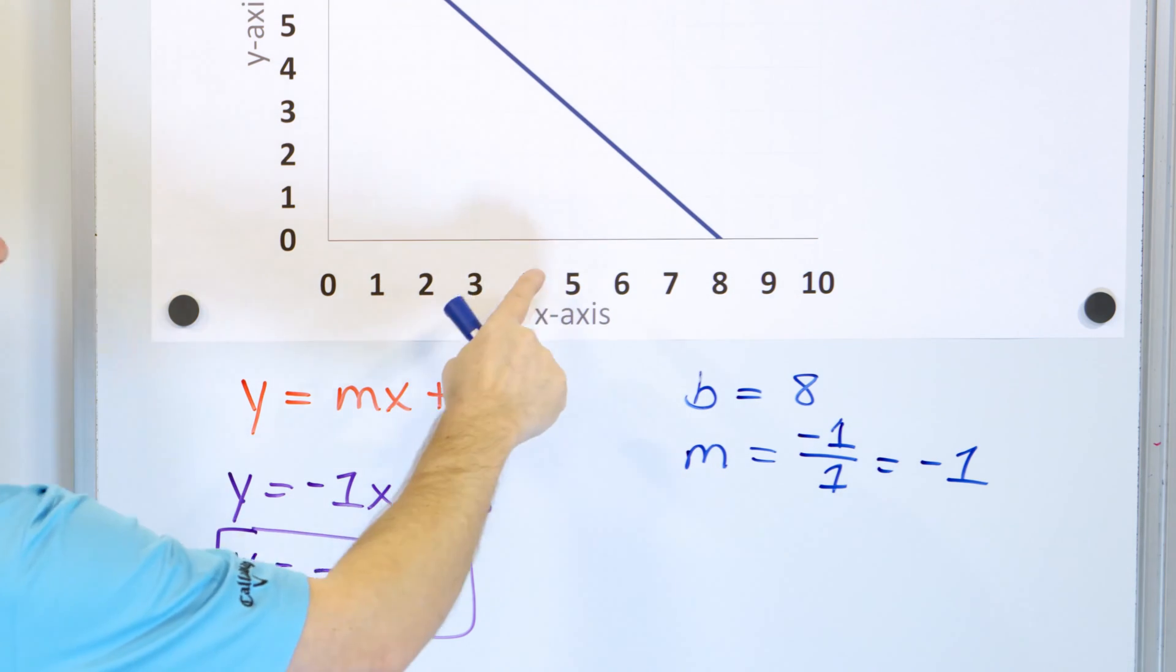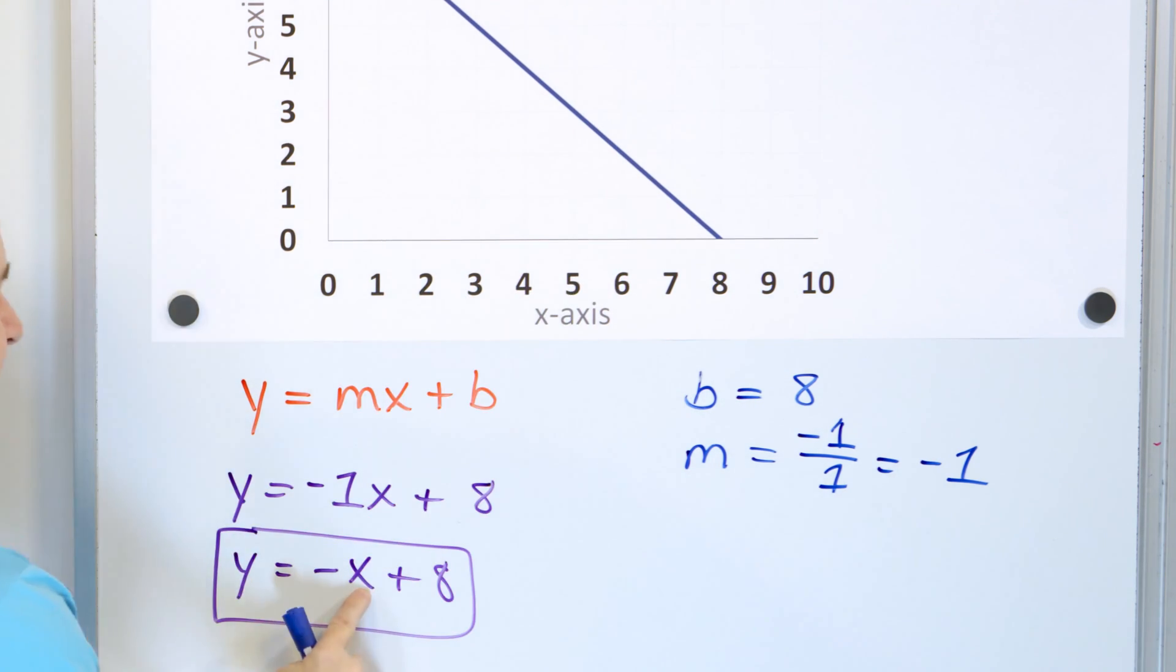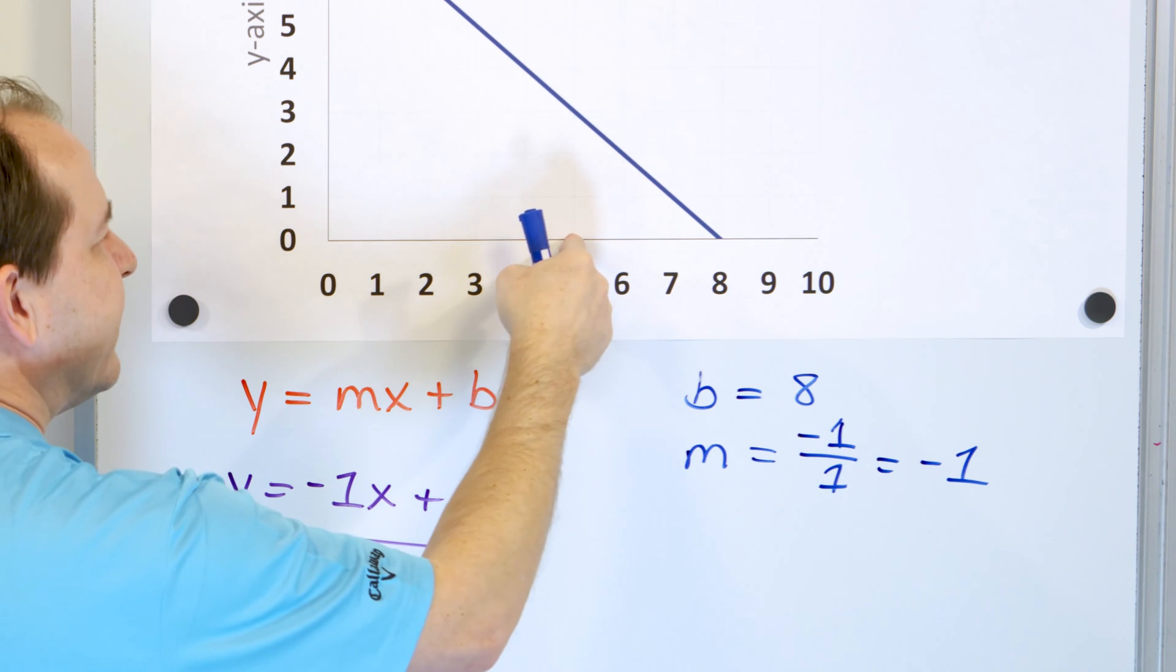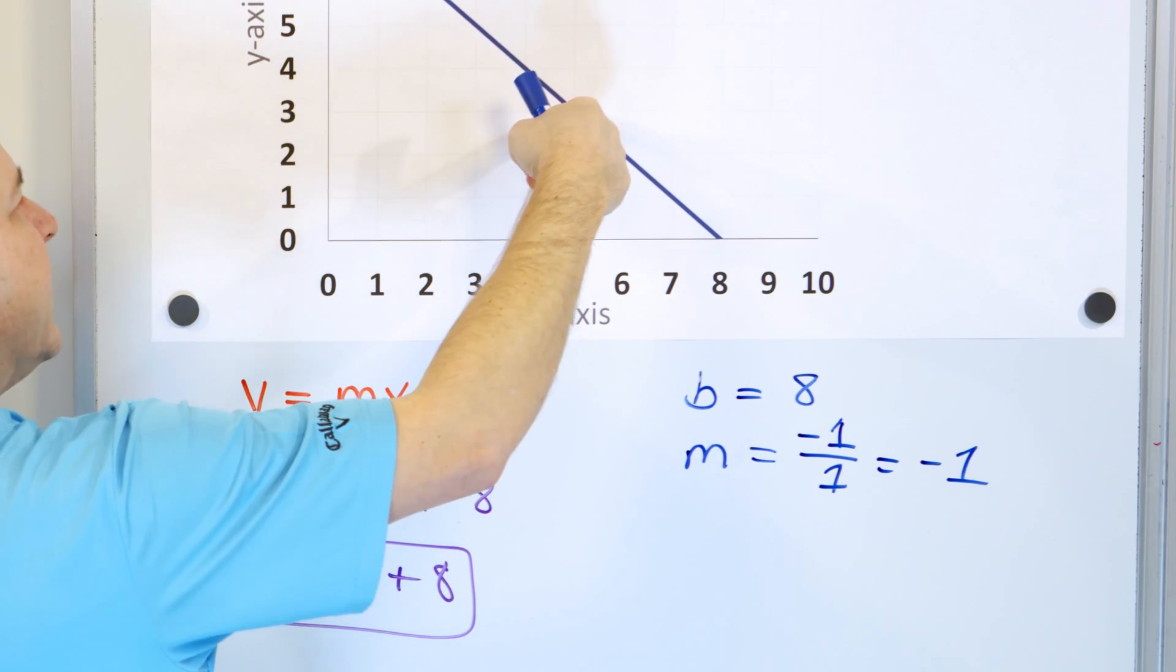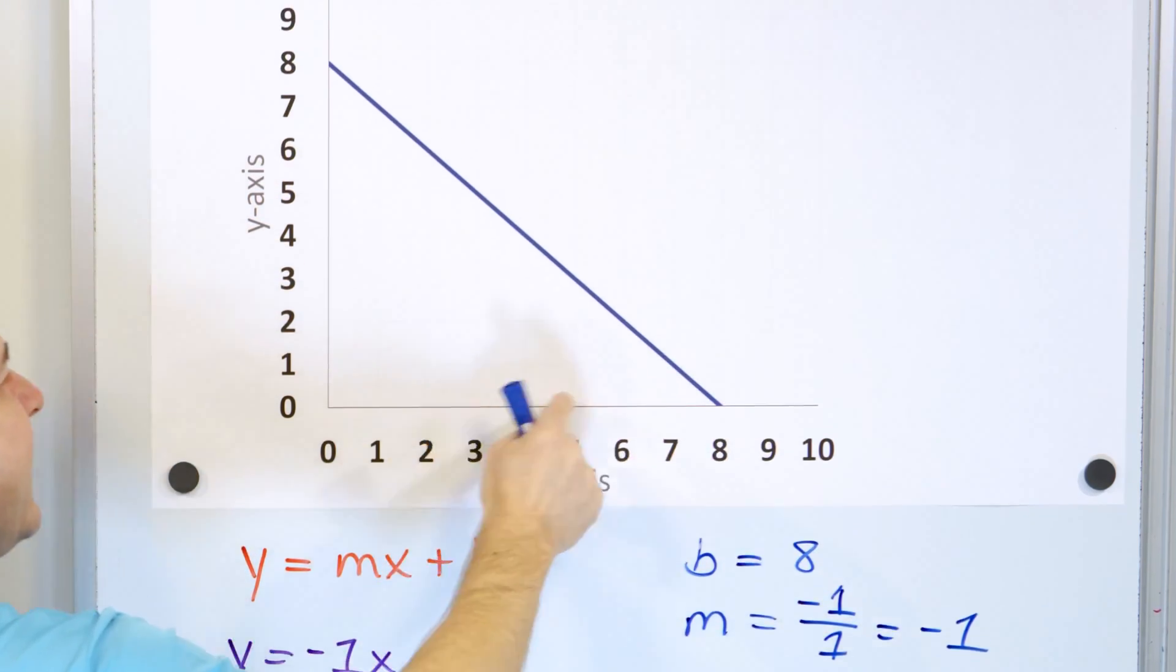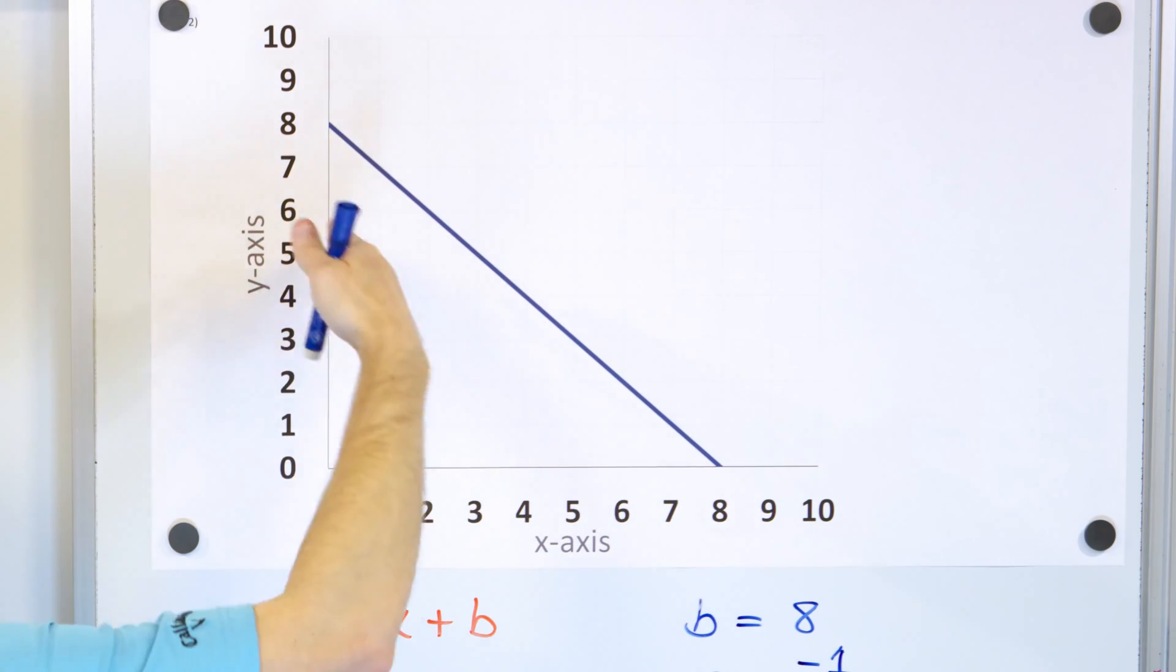Let's pick one more. Let's put a number 5 in for x. Negative 5 plus 8 is positive 3. So when x is 5, y is 3, so this point is also on the line. And you can put any value you want for x and you will get the corresponding y value that falls along this line.